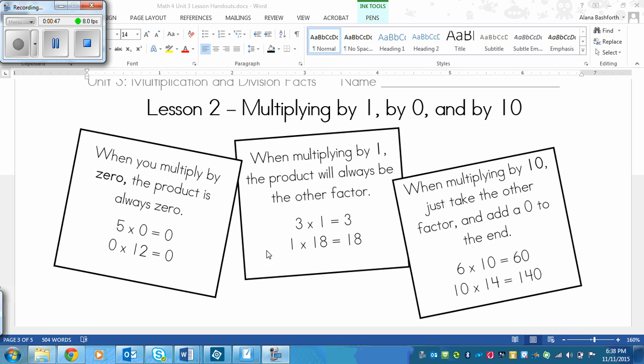Then we've got multiplying by 1 over here. In the product, the answer will always be the other factor. Now remember, a factor is a number. So when we multiply by 1, it's the other number is the answer. So here's our example: 3 times 1 equals 3, because 3 is the other number. In this case, 1 times 18 equals 18, because 18 is the other number. If I had 1 times 1000, it would equal 1000. And if I have 1 times 1, it still equals 1.